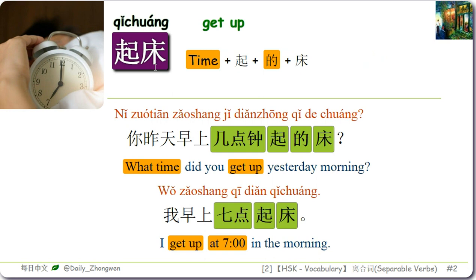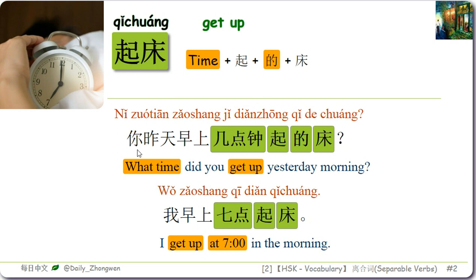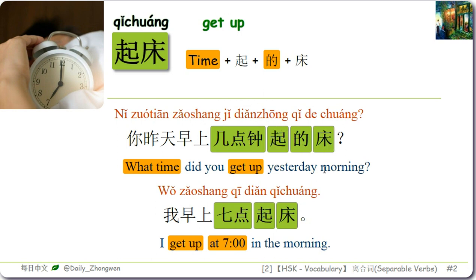The next word is 起床, meaning get up. A commonly used structure is: time plus 起 plus 得 plus 床. For example: 你昨天早上几点钟起的床 — What time did you get up yesterday morning? 我早上七点起床 — I get up at 7 o'clock in the morning.